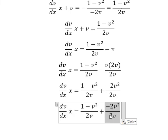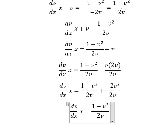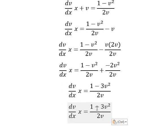This one with this one gives us negative 3v squared. We have 1 minus 3v squared over 2v. We put dv on the left and dx/x on the right.